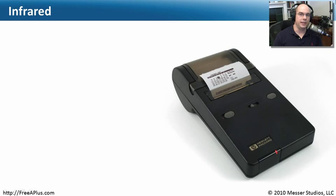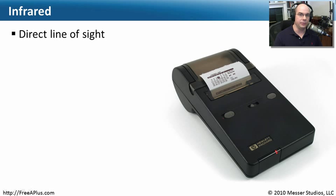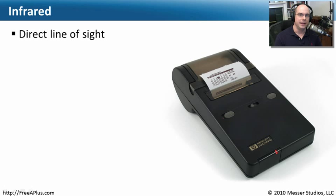Another method of communicating using laptops or portable devices is infrared technology. This may be built into your printers or laptop and you may not even realize the infrared capability is there. There is a key limitation: infrared requires a direct line of sight — the same technology used in a television remote control. If somebody or something stands in the middle, you're not going to be able to use infrared.